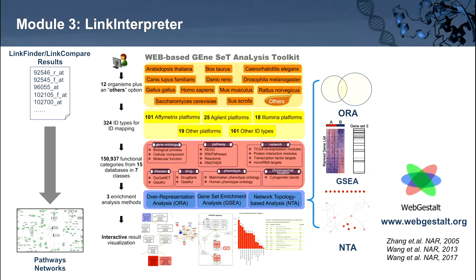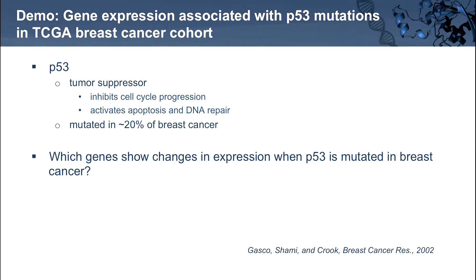Now that I've explained what LinkedOmics is, let's go through an example of how we could employ it to look at associations between different data types. I chose to look at gene expression associated with p53 mutations in the TCGA breast cancer cohort. p53 is a well-known tumor suppressor that inhibits cell cycle progression and activates apoptosis and DNA repair, and is mutated in approximately 20% of breast cancers. Since p53 is a transcription factor, we'd be interested in understanding which genes are associated with p53 mutations.